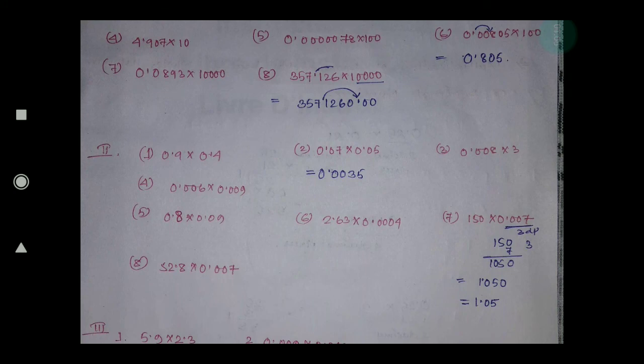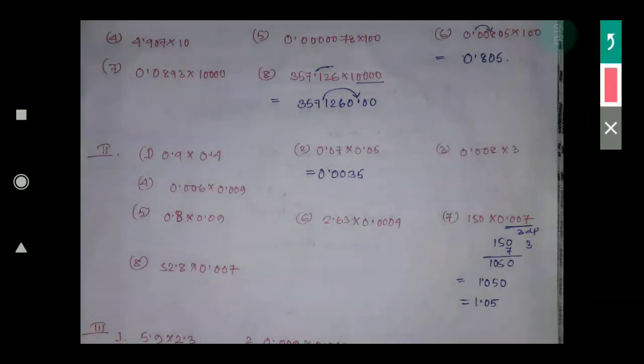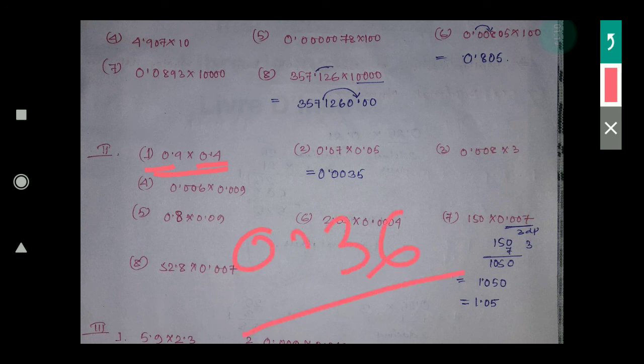Number 2 — multiplication of a decimal number by a decimal number. So 0.9 × 0.4: 9 × 4 is how much? 36. But here 1 decimal place and here 1 decimal place. So answer will be 1 plus 1 equals 2 decimal places. That means 0.36. Answer will be 0.36.